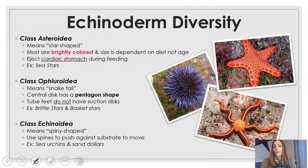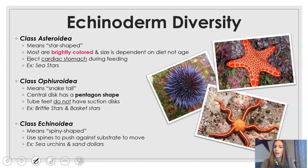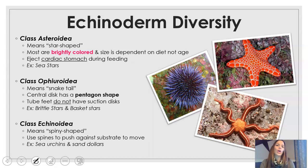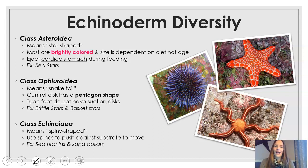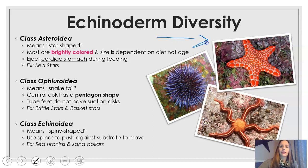Now that we've learned a little bit about what echinoderms can do, let's talk about their diversity. The first class, and probably the most familiar, is class Asteroidea — these simply mean star-shaped. Their size as they grow is not dependent on how old they are, but on how much they eat. Sea stars in areas with a large selection of food items grow faster and larger. They can actually eject their cardiac stomach when they eat, which starts breaking down the organism before they bring it in for the rest of digestion.